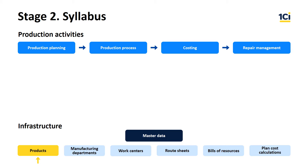Let us start with an example where a trading company decided to organize product manufacturing within the group. For this purpose, a new legal entity is registered. Let's call it SBS Manufacturing. SBS Manufacturing plans to produce two models of hoverboards – Special X1 and Kinder S1.